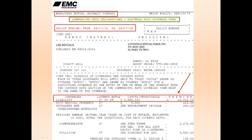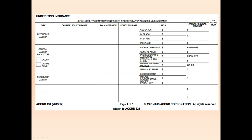Your next block is for your general liability policy information. You'll need to indicate whether it's occurrence or claims made, again the name of your carrier, policy number, policy dates, the limits, and the annual premium.